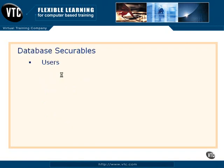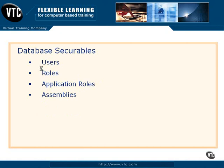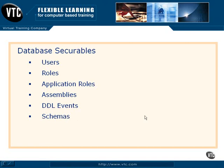Inside each database, the things that are securable are users, the roles in those databases, and the application roles in those databases. Here's where we start to jump out into the .NET framework — assemblies that run in context of databases are securable. DDL events, we'll talk about those later. Schemas are securable, and we can build objects and put them in the namespaces of schemas, then change permissions to that schema and automatically change permissions to all those objects. That's really cool stuff.